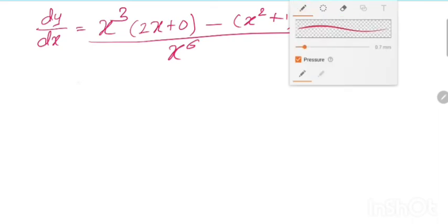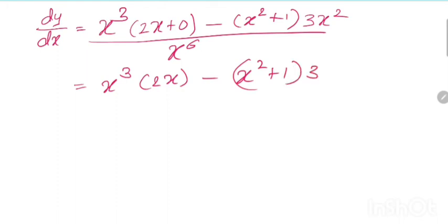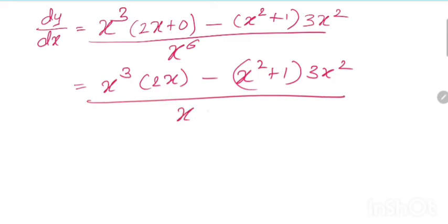In the next step we can write: x cube times 2x minus x square plus 1 times 3x square, divided by x to the power 6. This is our answer.